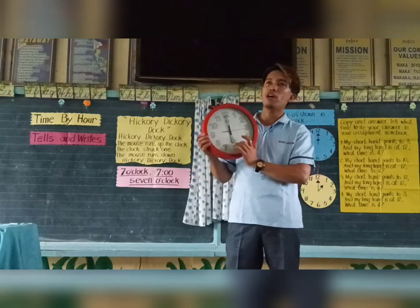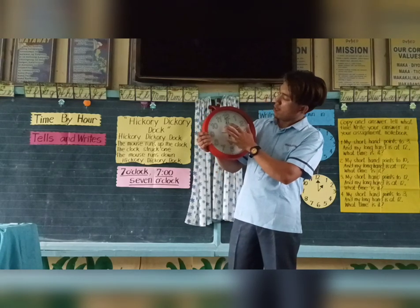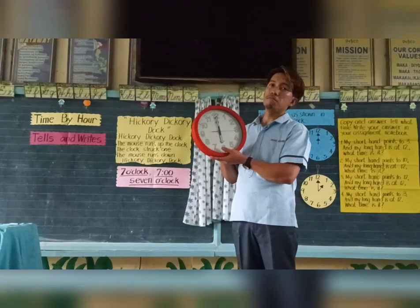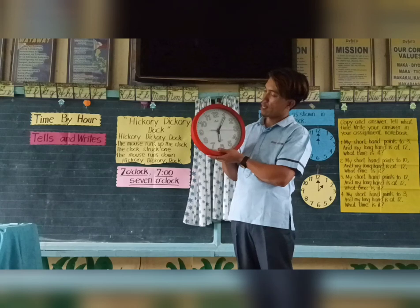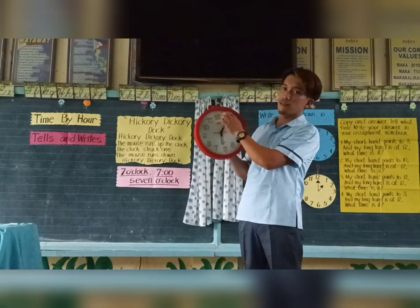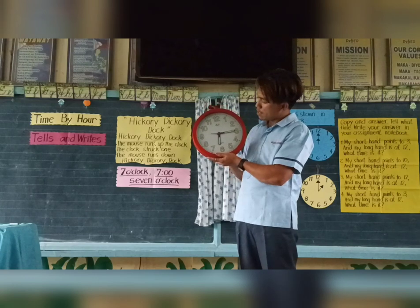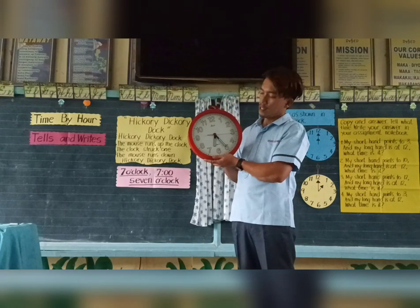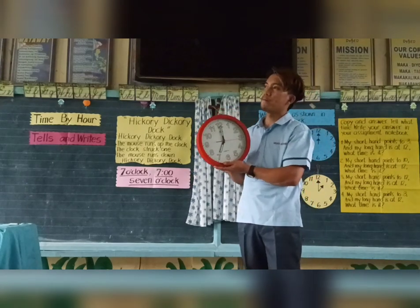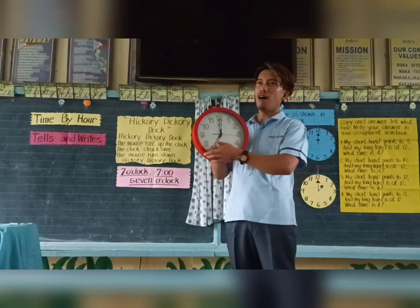When we move the long hand clockwise, it tells about minutes. Starting at 5 minutes, then 10, 15, 20, 25, 30, 35, 40, 45, 50, 55, 60 — one complete rotation of the long hand, or minute hand, is equal to one hour.